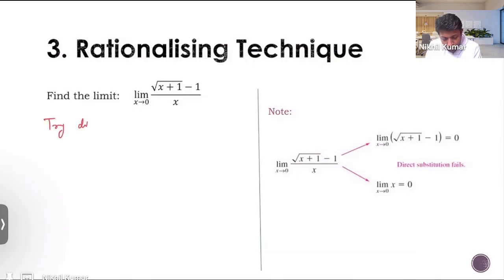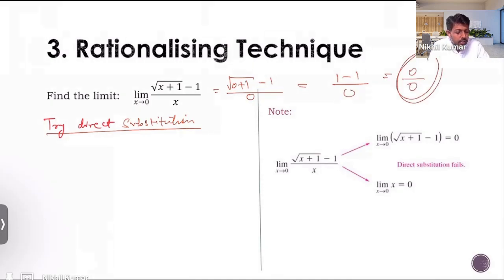Try direct substitution. Put x equal to 0 everywhere. If you do that, we get 0 plus 1 here minus 1 upon 0. This is going to be 1 minus 1 upon 0, which is 0 upon 0. What we get is an indeterminate form. We are stuck again, getting an indeterminate form. We can clearly see that direct substitution is not working here.